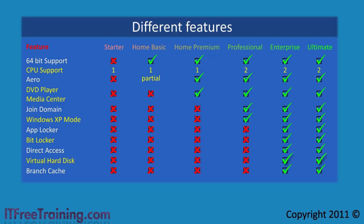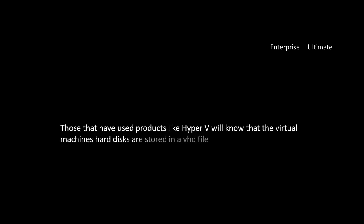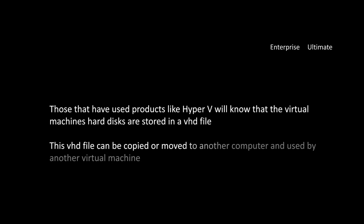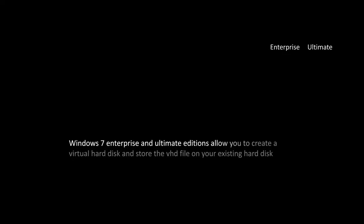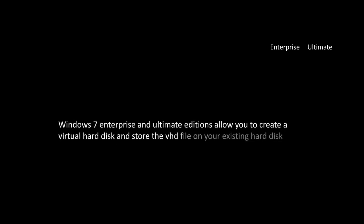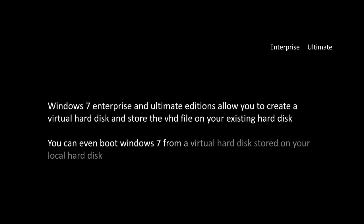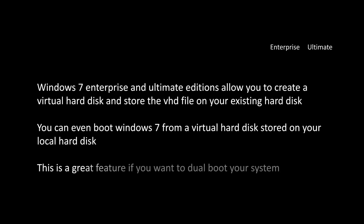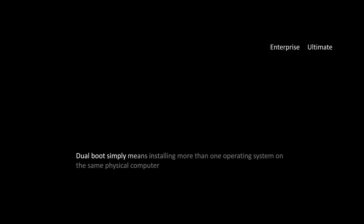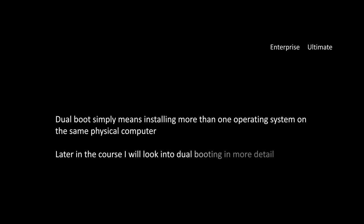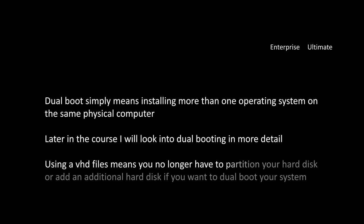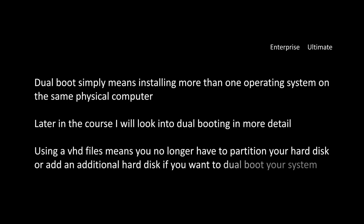Next is support for virtual hard disks. Those who have used products such as Hyper-V will know that virtual machine hard disks are stored in a VHD file, which can be copied or moved to another computer and used by another virtual machine. Windows 7 Enterprise and Ultimate Editions allow you to create a virtual hard disk and store the VHD file on your existing hard disk. You can even boot Windows 7 from a virtual hard disk stored on your local hard disk. This is a great feature if you want to dual boot your system, which simply means installing more than one operating system on the same physical computer. Using a VHD file means you no longer have to partition your hard disk or add an additional hard disk to dual boot.